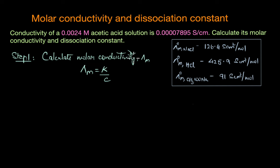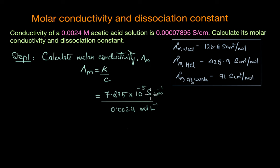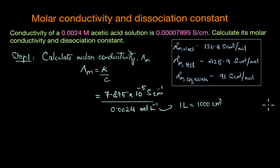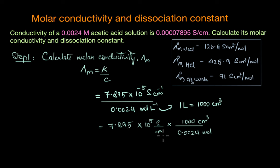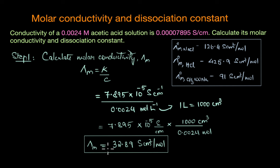The first step is calculating molar conductivity. We substitute the given values into the equation: molar conductivity = 7.895 × 10⁻⁵ Siemens per centimeter divided by 0.0024 moles per liter. The units are different, so to ensure consistent units, we convert liters into cubic centimeters — 1 liter equals 1,000 cubic centimeters. Substituting, we get 7.895 × 10⁻⁵ S/cm divided by 0.0024 mol per 1,000 cm³, giving a molar conductivity of 32.89 S·cm² per mole.